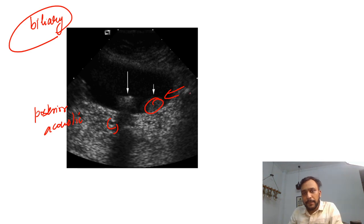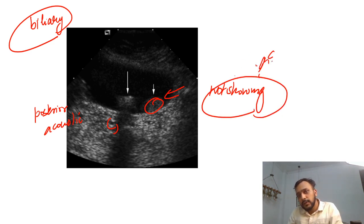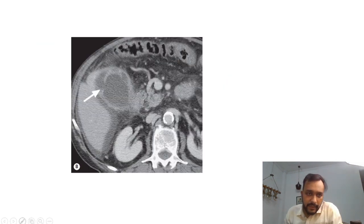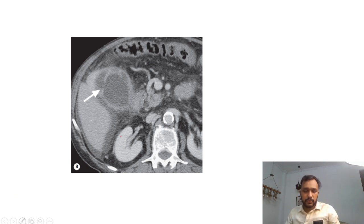There is another isoechoic lesion in the gallbladder, but this lesion is not showing posterior acoustic shadowing. This is a case of gallbladder polyp.